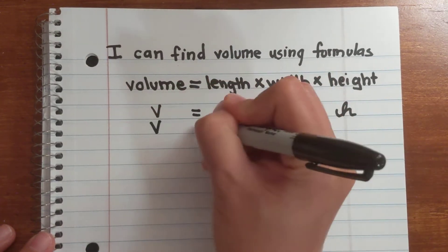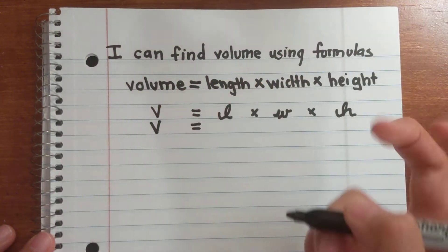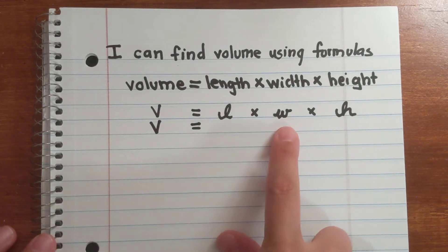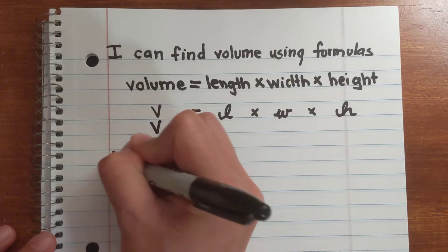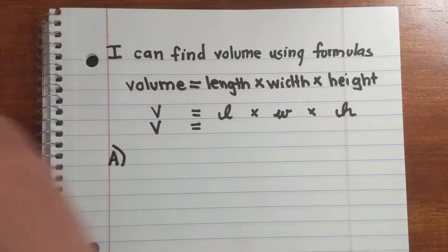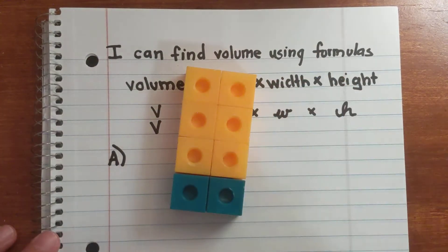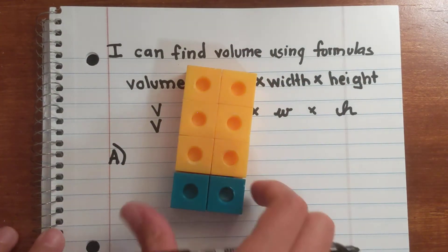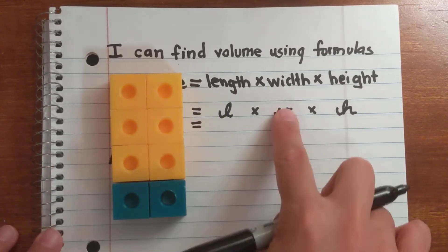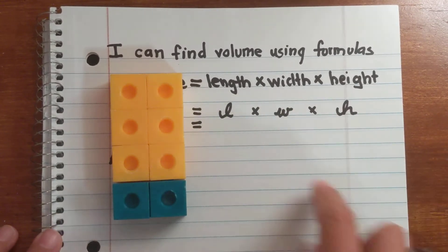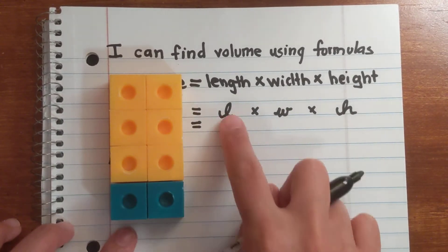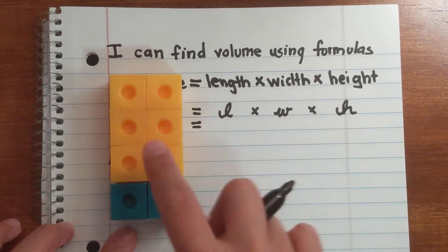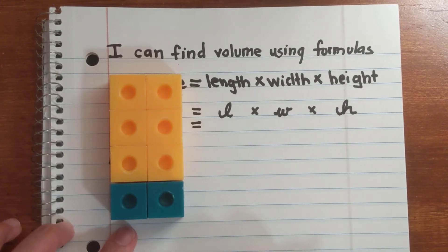We're also going to find a shortcut volume formula for rectangular prisms, but we're going to discover that together. So let's look at our first example. When we have a 3D figure, we're just going to fill in each part to find the volume.